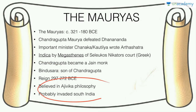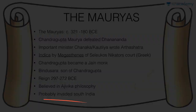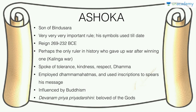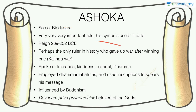Bindusara believed in Ajivika philosophy and probably invaded South India. But Ashoka definitely expanded the empire greatly. Ashoka is very important — we still use his symbols today. Rashtrapati Bhavan, the Make in India emblem — many national symbols are derived from Ashoka's rule. Even the national movement was very inspired by King Ashoka; he gave confidence to the national movement. He was deeply influenced by Buddhism and therefore spoke of tolerance, kindness, respect, and Dhamma. He employed Dhamma Mahatmas and spread his ideas everywhere.